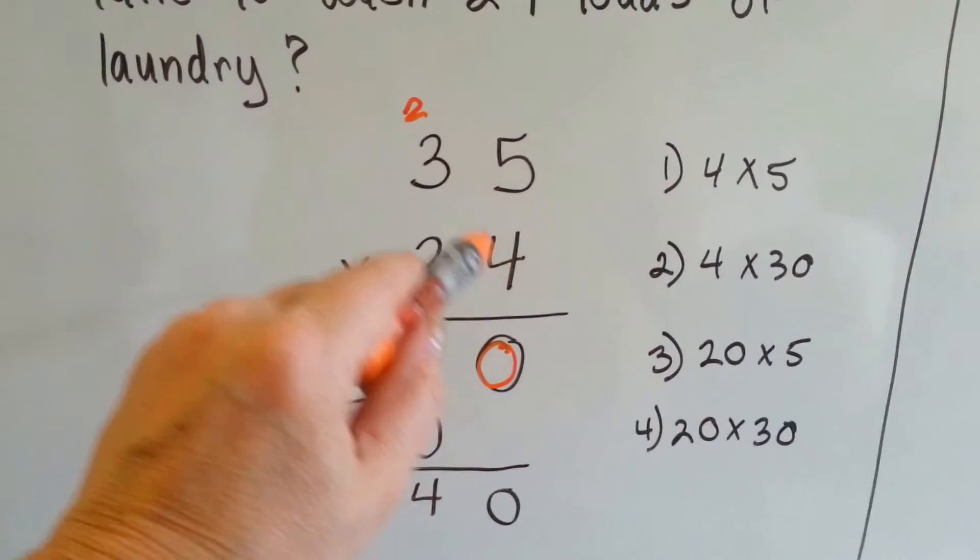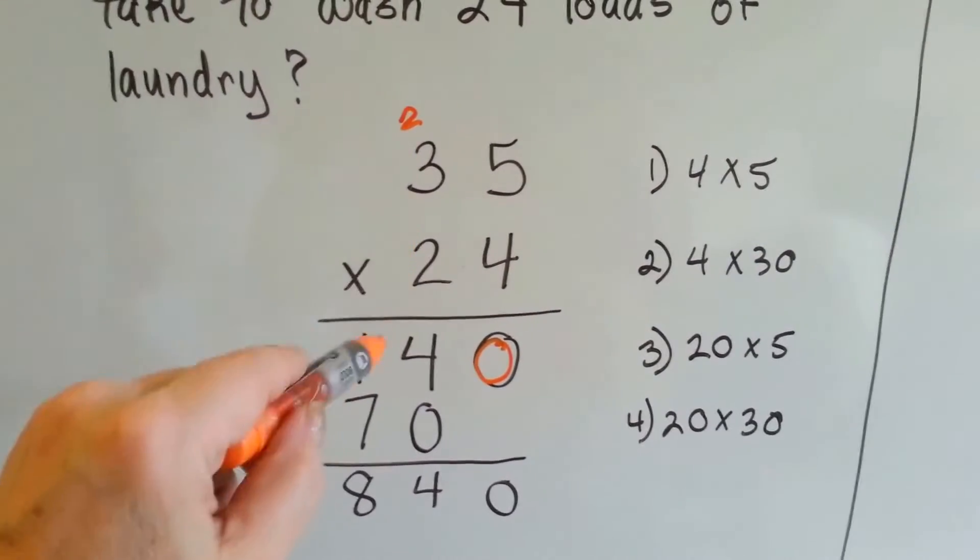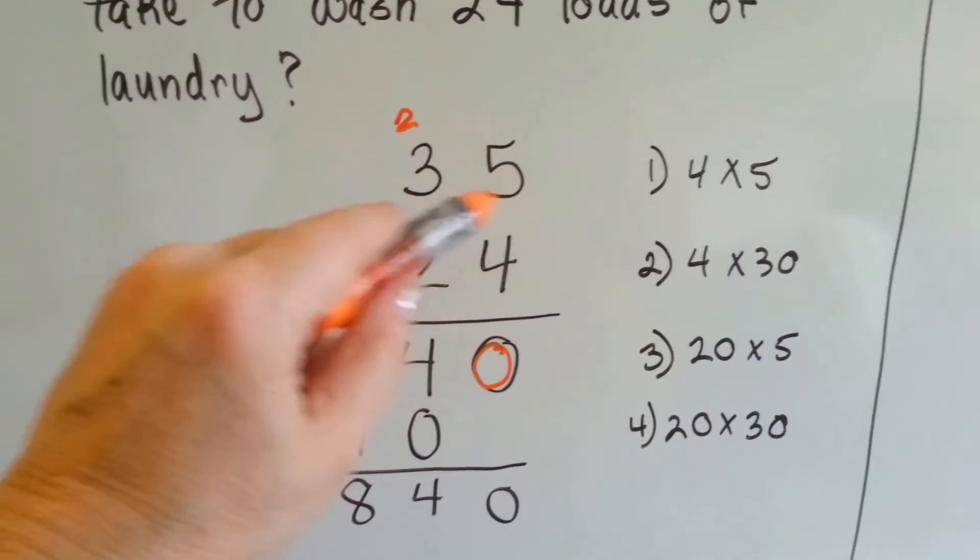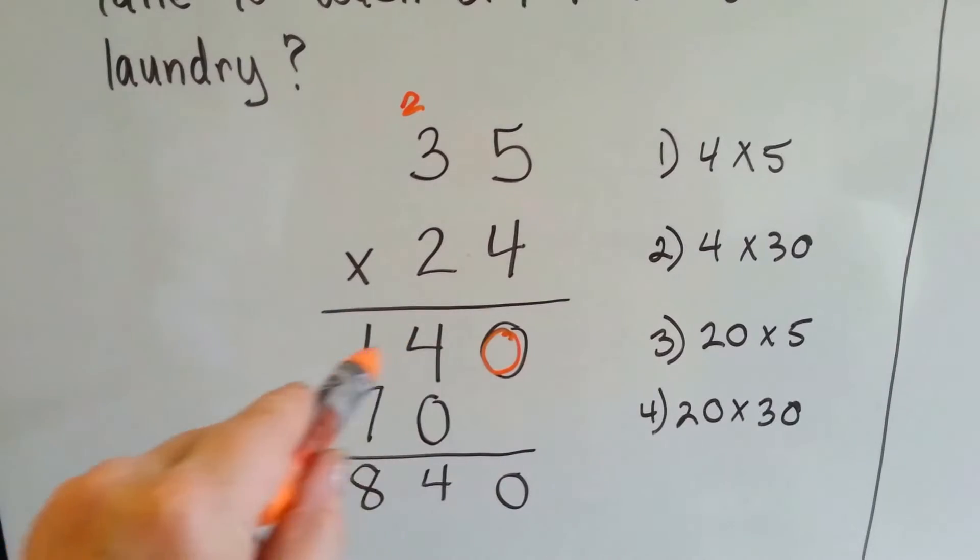And it's really 4 times 30, isn't it? It's 4 times 30 plus the 2, the two 10s that we carried over from the 1s. So we have 1, 4, 0 here now.